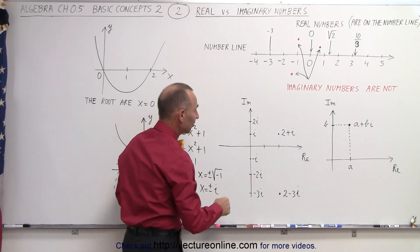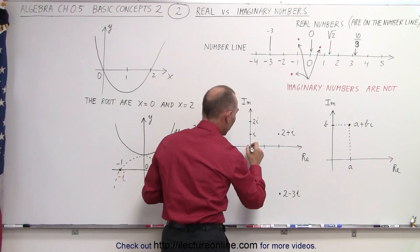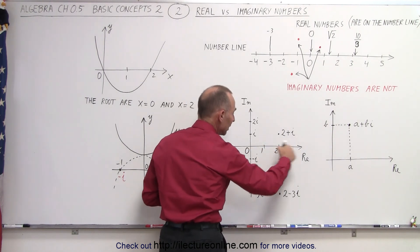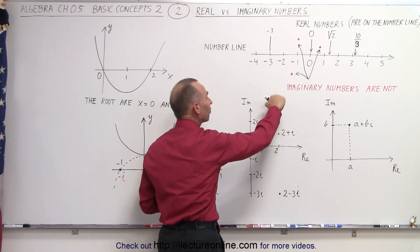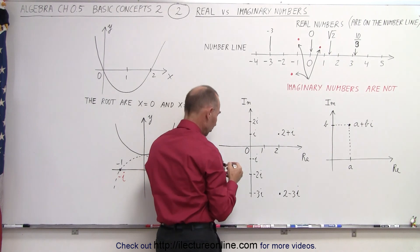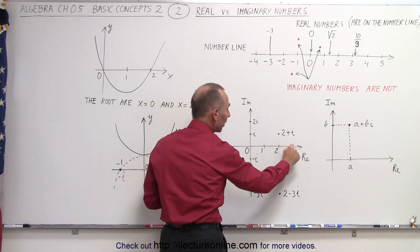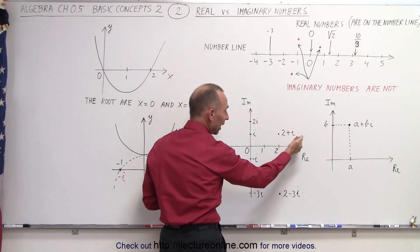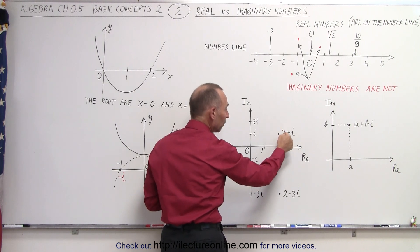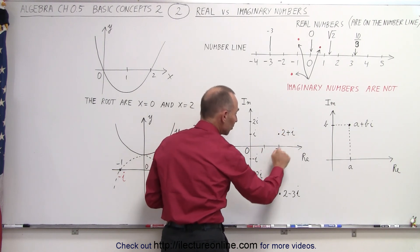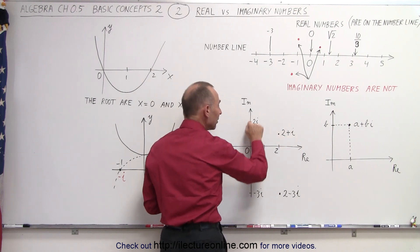Here's an example. We have a dot that is two units away from the origin on the number line — zero, one, two — and one unit away from the number line in the positive direction of the imaginary axis. The real part is two and the imaginary part is one times i, or simply i. So this dot represents the number two plus i: the real part two units away from the origin on the real axis, and i is one unit away on the imaginary axis.